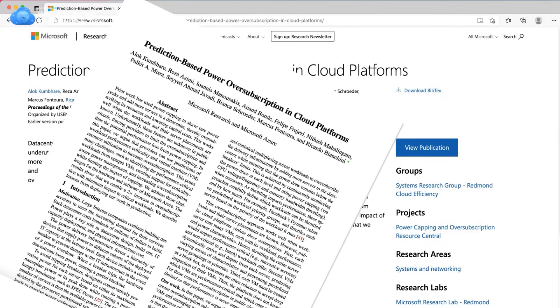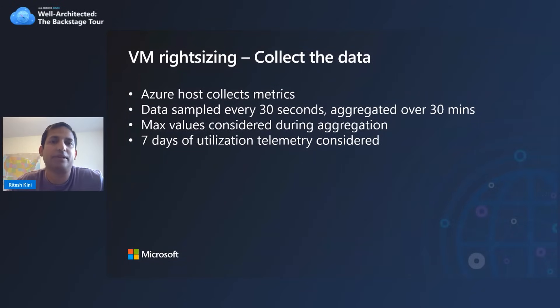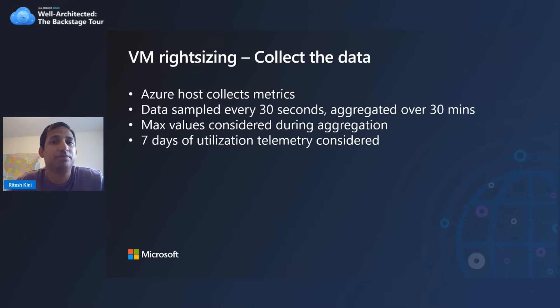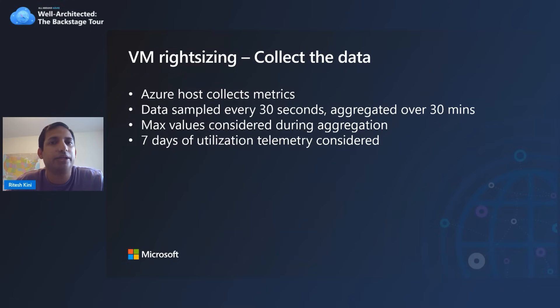Let's go back and figure out how we come up with the recommendations shown in Advisor. We start by collecting utilization information from the Azure host machines that run the VMs. We don't know who the VMs are run by or what workloads are running — we simply know CPU, memory, and network utilization. Metric information is sampled at 30 seconds and aggregated over 30 minutes, taking the max values to be ultra conservative. We consider the last seven days of utilization while figuring out recommendations.